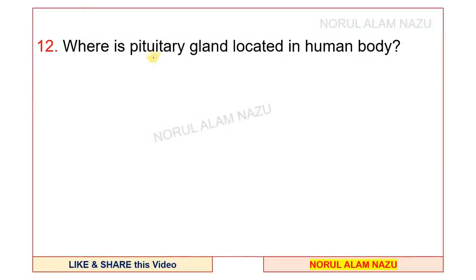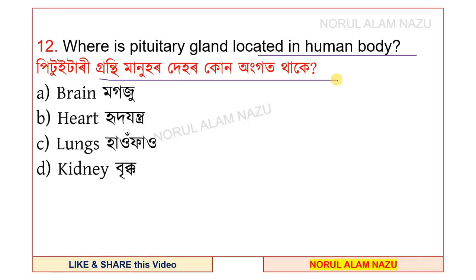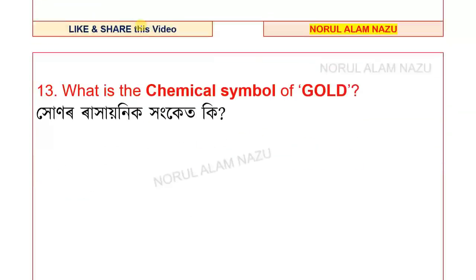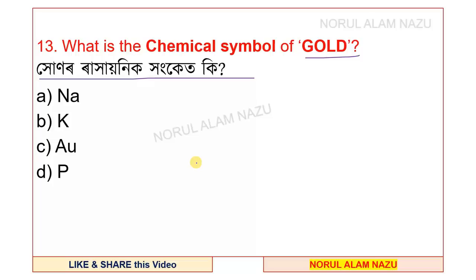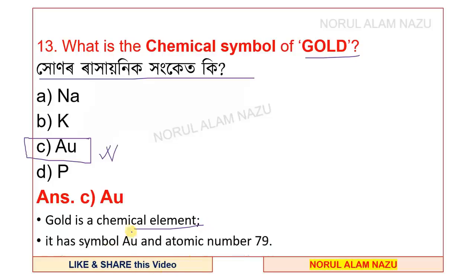Question number 12: Where is the pituitary gland located in the human body? The pituitary gland is located in the brain. Question: What is the chemical symbol of gold? Gold is a chemical element. Its symbol is AU and its atomic number is 79. The answer is 79.